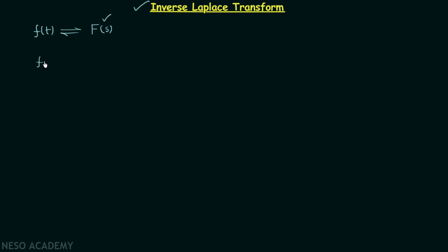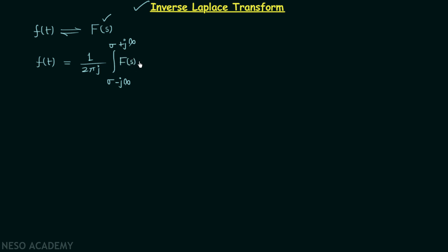To calculate the time domain signal f(t) using the given Laplace transform, we will use the formula of inverse Laplace transform, which is 1 over 2πj, integration from σ minus j∞ to σ plus j∞, of the Laplace transform F(s) multiplied by e^(st) ds.